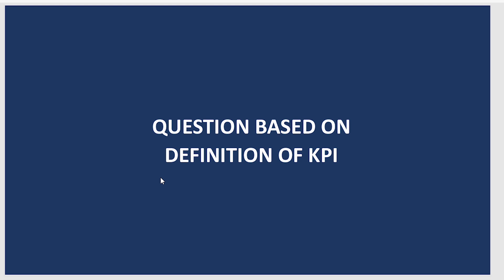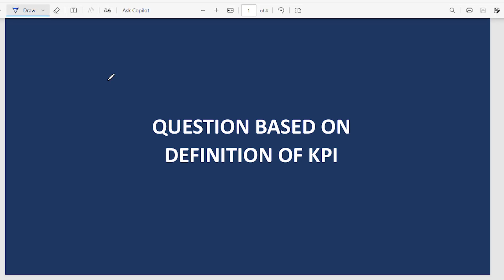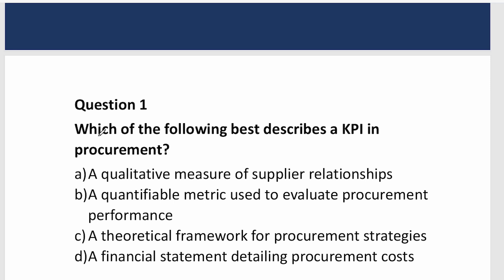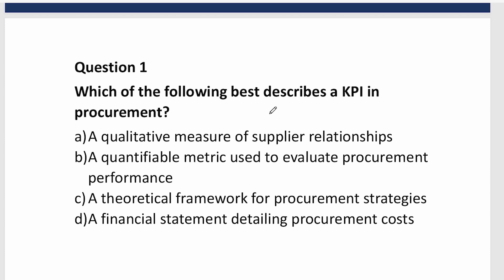Based on the definition, exam questions can include things like: 'Which of the following best describes a KPI in procurement?' Options might be: a qualitative measure of supplier relationship; a quantifiable metric used to evaluate procurement performance; a theoretical framework for procurement strategies; or a financial statement. The answer is a quantifiable metric used to evaluate procurement performance.